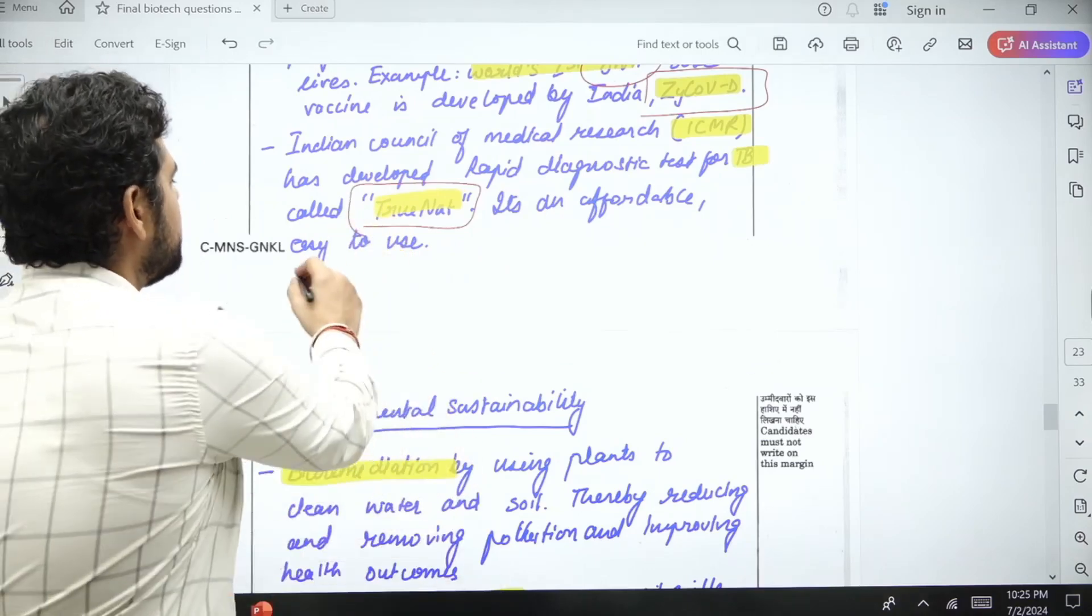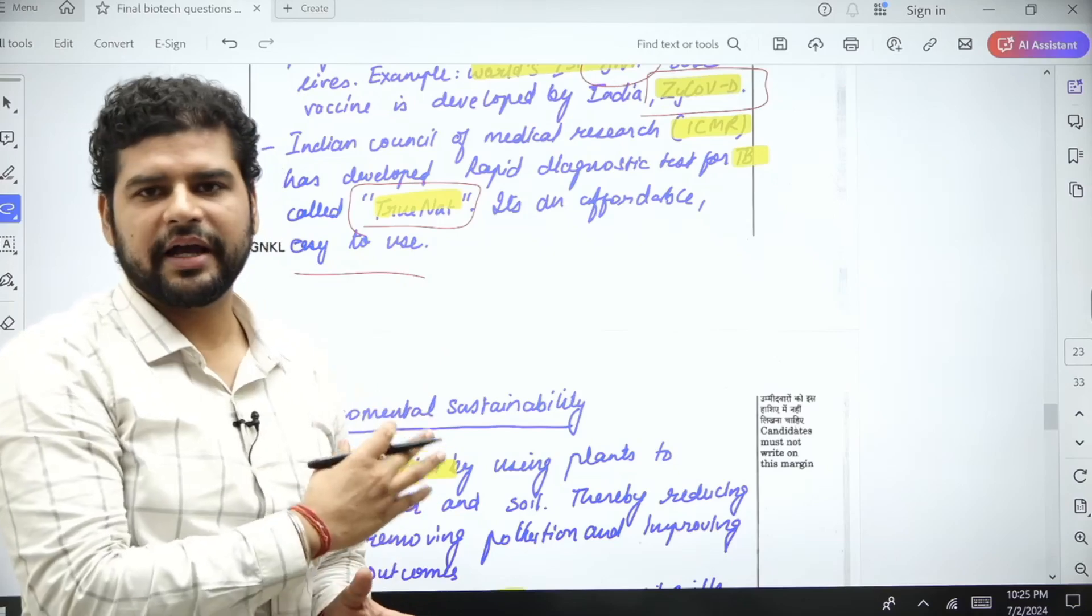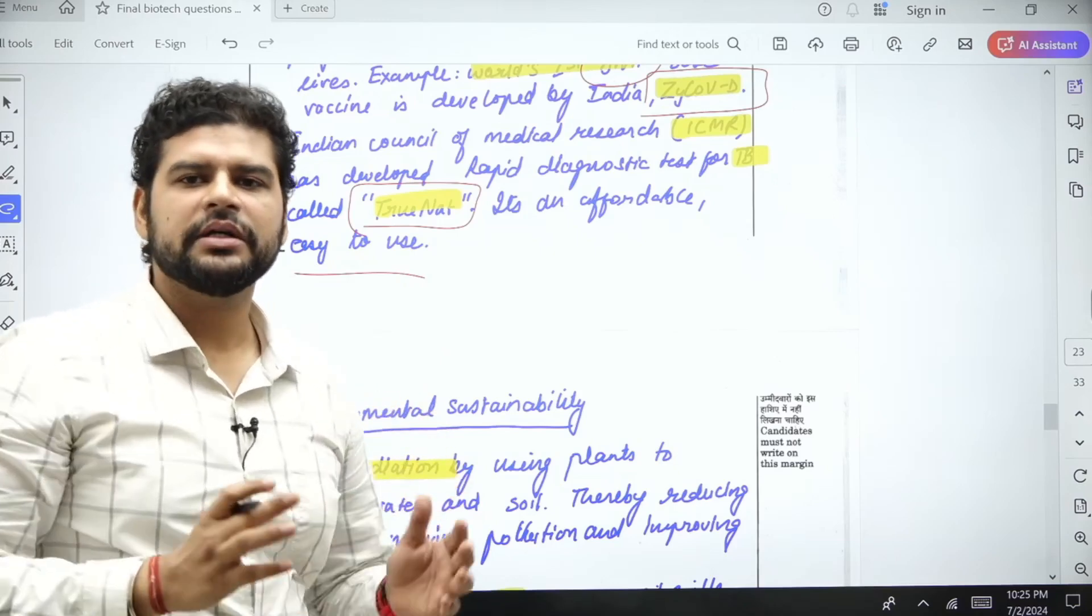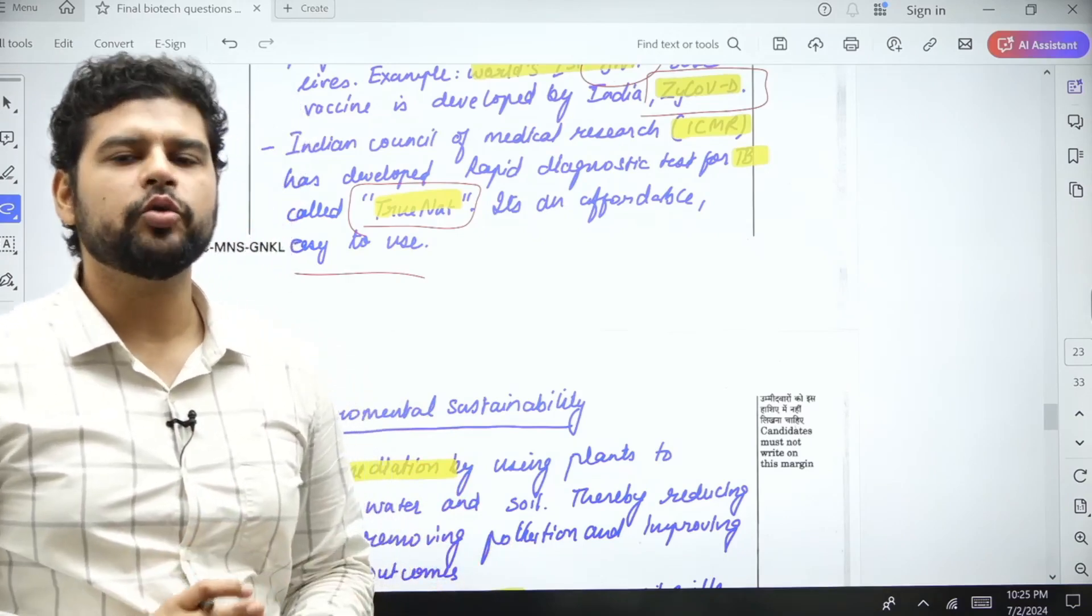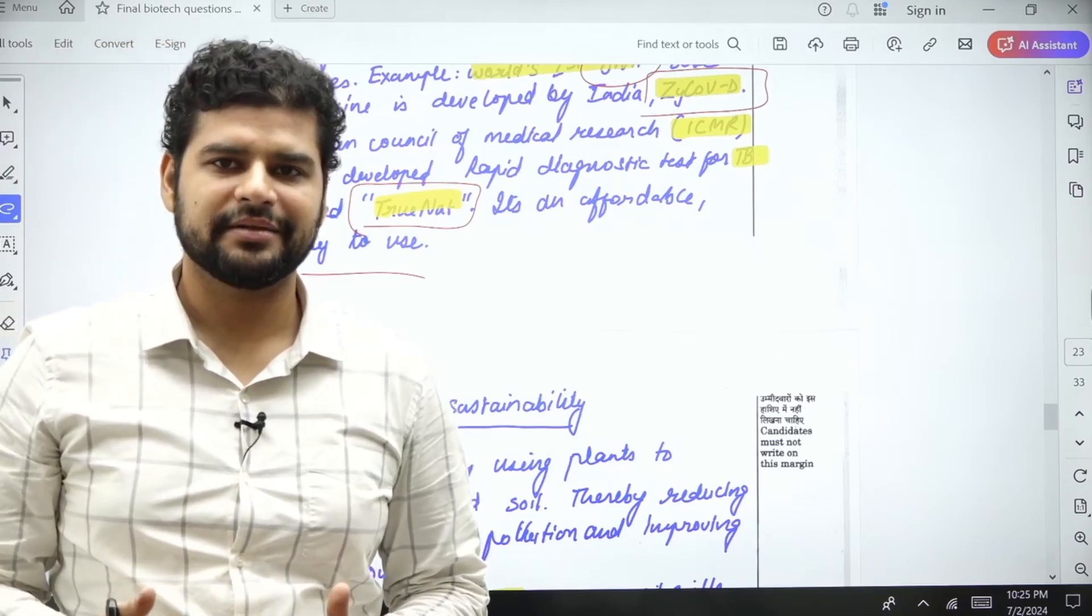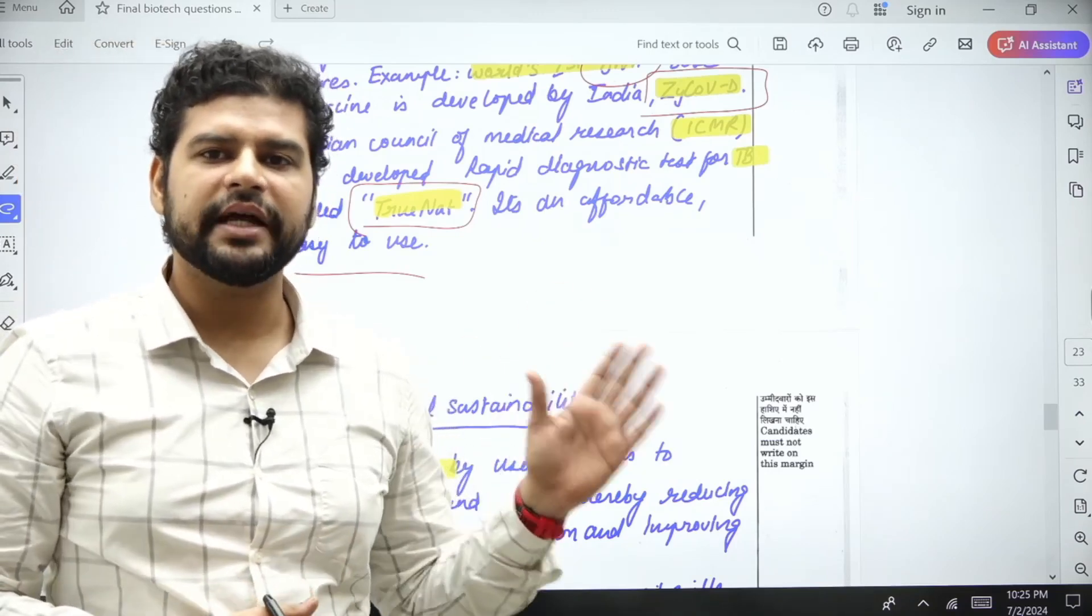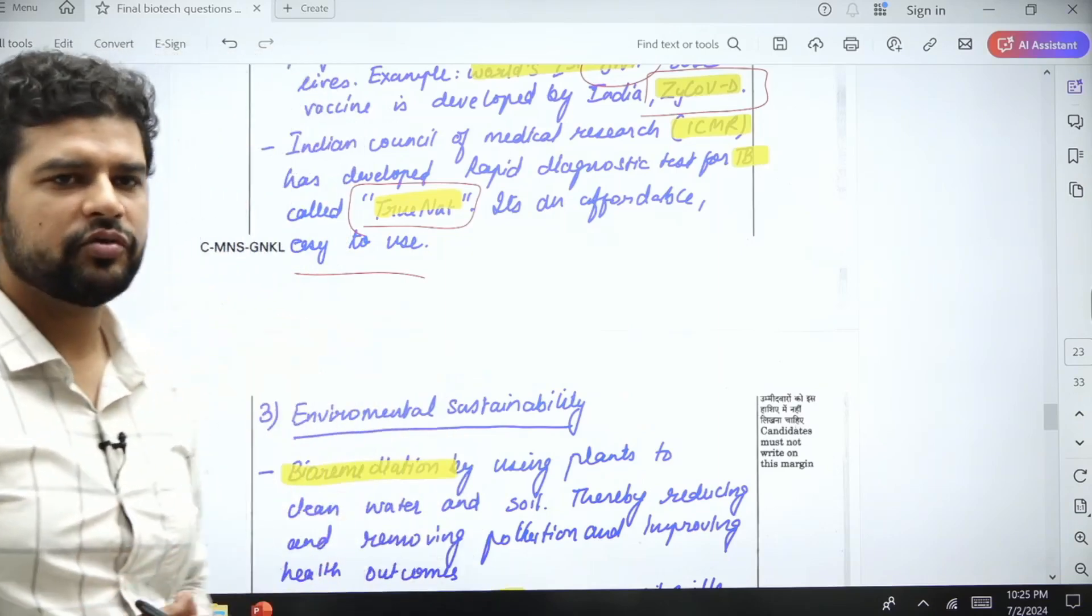It is an affordable, easy-to-use kit. One of the most important benefits of this kit is why I have written this example: it is a very simple kit, it does not require a lot of resources, and this is especially true for if you are in a remote village. How will you test the TB? So this kit can be used where there is resource crunch. That is why I use this example.